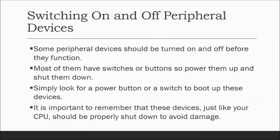Some peripheral devices should be turned on and off before they function. For example, a USB mouse will work automatically when connected, though some devices have power switches or buttons. Simply look for a power button or switch to boot up these devices and shut them down. It is important to properly shut down devices, just like your CPU, to avoid damage.